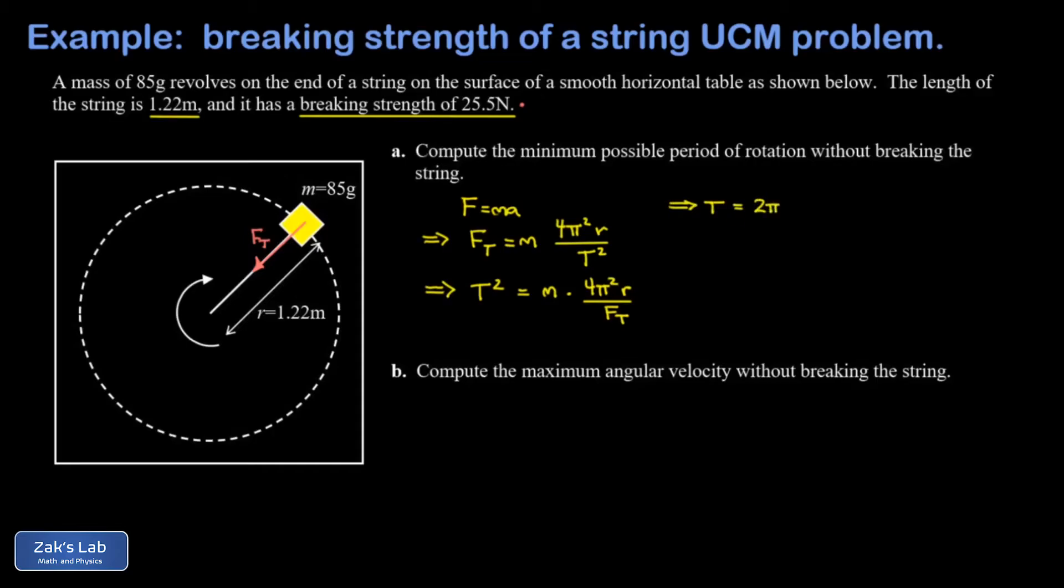So there's our general solution: we have 2π square root mr over Ft. Now all we have to do is plug things in. Our mass was 85 grams which we need to change to kilograms, so that's 0.085. The radius of curvature, in other words the length of the string, that was 1.22 meters. And we're going fast enough that the tension is at the maximum value of 25.5 Newtons, so we plug that in for Ft. When I run the numbers on this to three significant digits, I get 0.401 seconds.